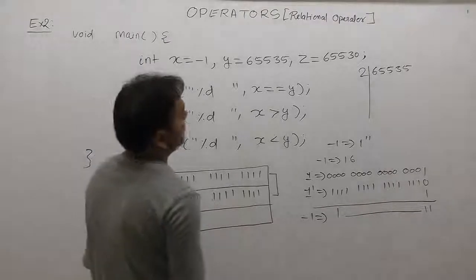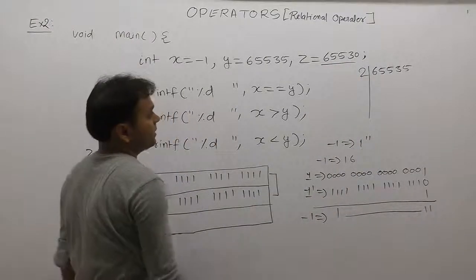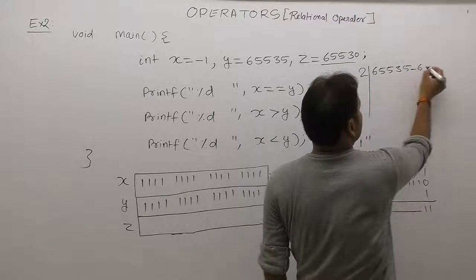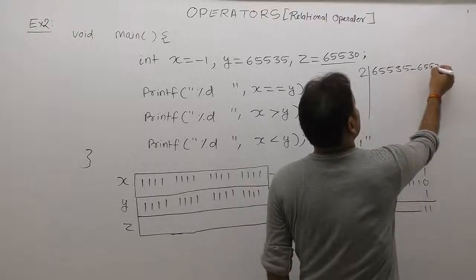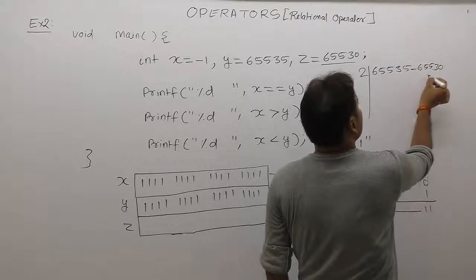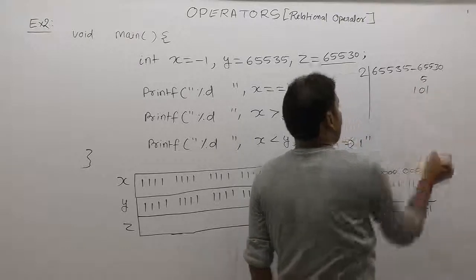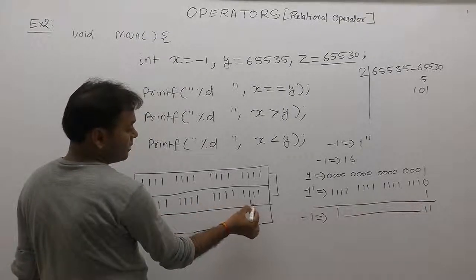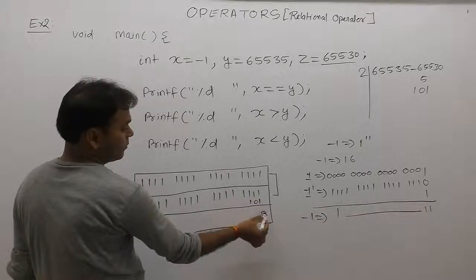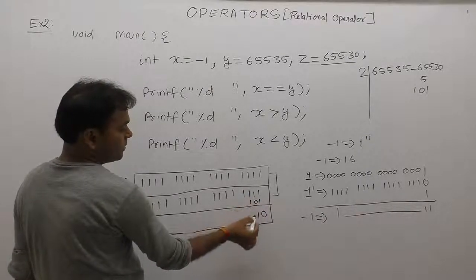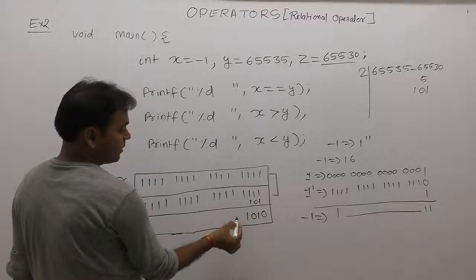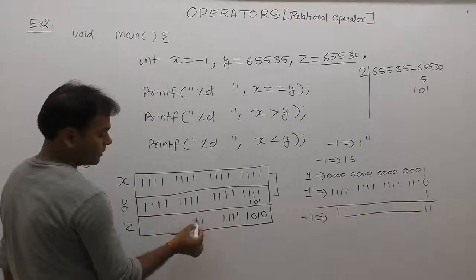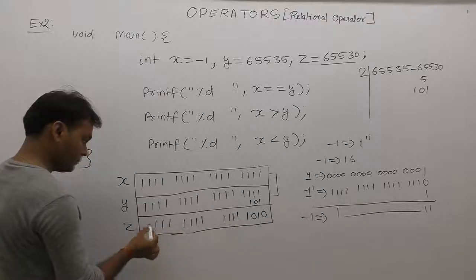Next, about z = 65,530. This means 65,530 is equivalent to 65,535 minus 5. The subtraction gives only 5, and the binary of 5 is 101. Subtracting from all-ones: one minus one is zero, one minus zero is one, one minus one is zero, remaining bits stay the same. This gives the binary number of 65,530.